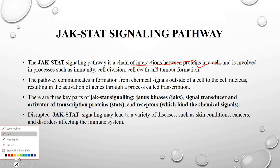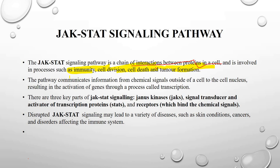It is involved in a process that includes the immunity, cell division, cell death, and cell formation — essentially cell functioning. The pathway communicates information from chemical signals outside of a cell to the cell nucleus through a process called transcription, meaning the gene expression is taking place.